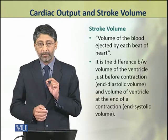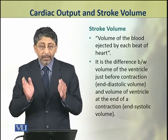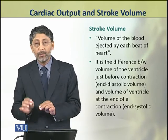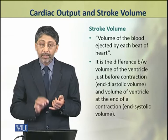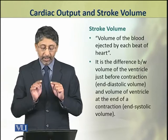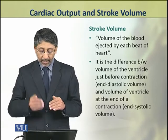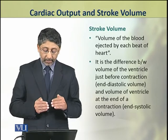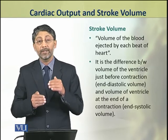In comparison to cardiac output, which is a quantity of 1 minute, stroke volume is the volume of blood which is ejected from the heart by each beat. It is the difference between the volume of the ventricle just before contraction — the end diastolic volume — and the volume of the ventricle at the end of contraction — the end systolic volume.